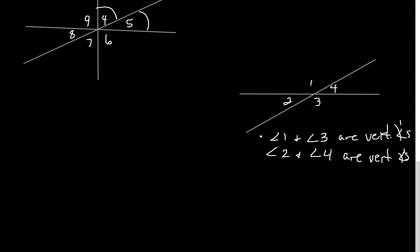The definition again: vertical angles are two angles such that the sides of one angle are opposite rays to the sides of the other angle. Here's angle one — its sides are opposite rays to the sides of the other angle. This is a ray going one way, and this is a ray going the other way. You can see they're vertical angles.